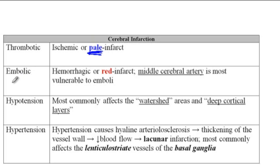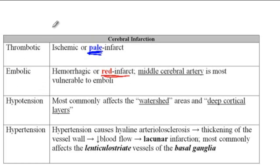There could also be embolic strokes where a piece breaks off and lodges into a distal artery and causes blockage. But by the time the emboli resolves and the body digests it, blood will reperfuse and thus cause hemorrhage. So this type of ischemic stroke presents with a red infarct. Risk factors for embolic strokes include atrial fibrillation, which increases the risk of clot formation.